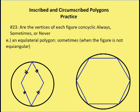Next, question E: an equilateral polygon — always, sometimes, or never? The answer is sometimes. In case one, a rhombus is an equilateral polygon but is not equiangular, so it's not concyclic. In another case, a regular hexagon that is both equiangular and equilateral will be concyclic. So an equilateral polygon is sometimes concyclic — when it is also equiangular.